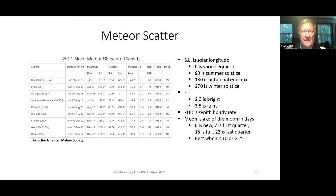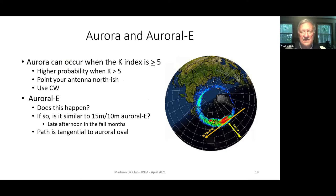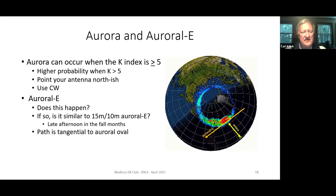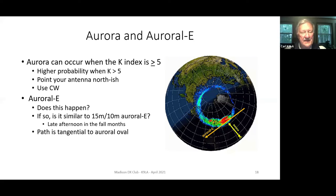Aurora and auroral E - generally aurora can occur when the K index is greater than or equal to 5, with higher probability when the K is greater than 5. Point your antenna northish and use CW. Auroral E - I wonder if that can happen on six meters. We have auroral E on 15 and 10 meters in the fall in the late afternoon to Scandinavian countries, and I wonder if it could happen on six meters. Auroral E is when the path is tangential to the auroral oval. If it can happen on 10 meters, there might be a possibility it can happen on six meters.